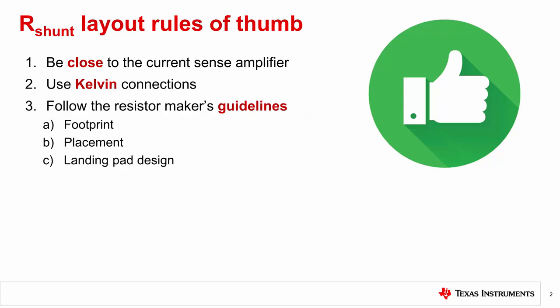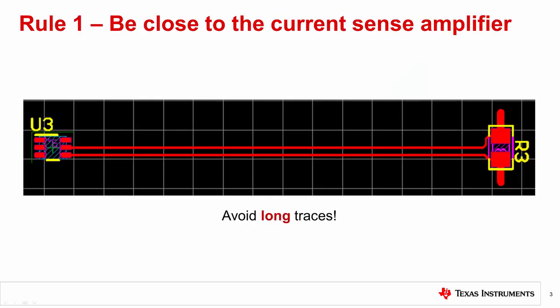Let's get into some details on each rule. Placing the shunt resistor close to the amplifier is important as it avoids complications resulting from long traces. The voltage on these traces is small and the current is low, so electromagnetic interference and noise is a concern. Also, the parasitic trace capacitance and resistance, while small, can add to the error of the system, especially if very low shunt resistances are used.